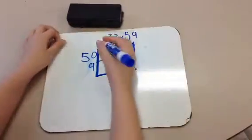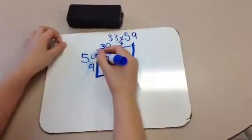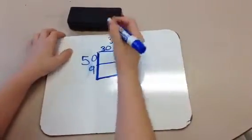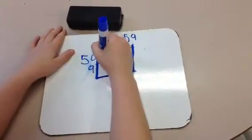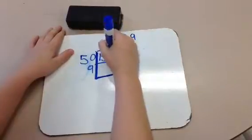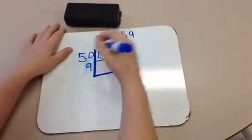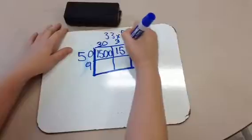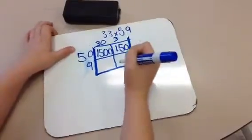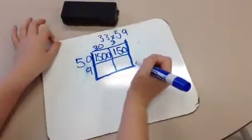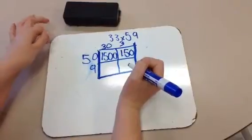So now I'm going to multiply 50 times 30, which is 1500, and 50 times 3 is 150.